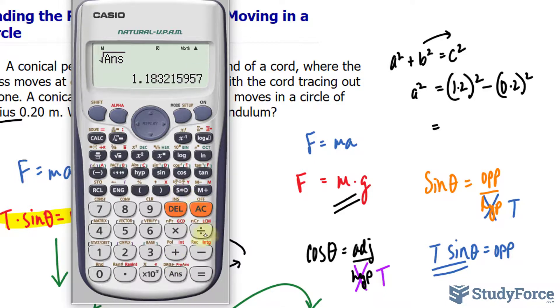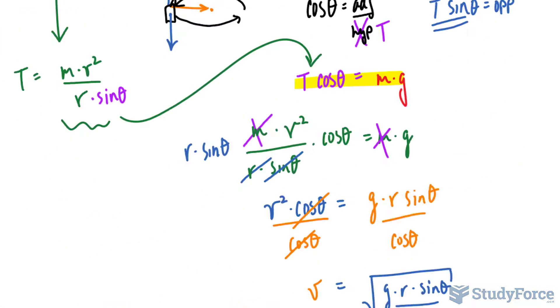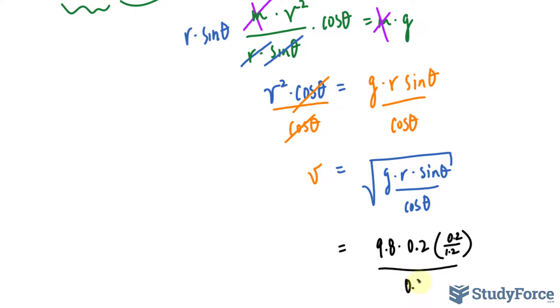So taking this value and dividing it by the hypotenuse gives us what we can replace cosine theta with, so that number is 0.9860, 0.9860.